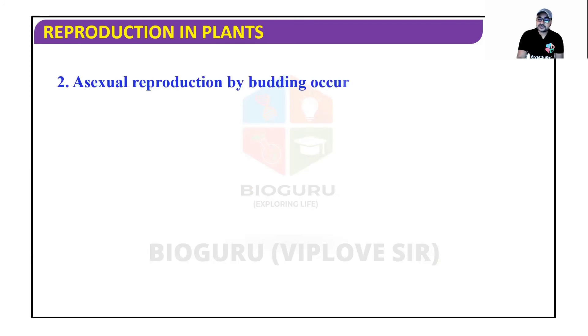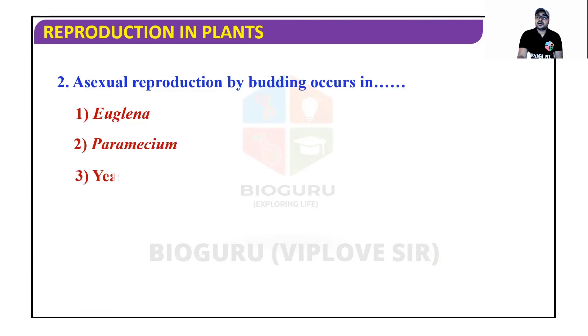MCQ: Asexual reproduction by budding occurs in — Euglena, Paramecium, yeast, or bacteria? The correct answer is yeast.